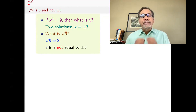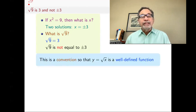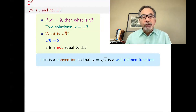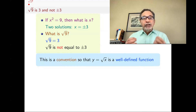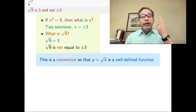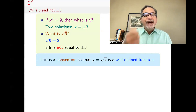Square root of 9 means it's 3, and that's a convention — it's a definition. It's something we have decided as mathematicians, and the reason we have decided that is basically because we want the function y equals square root of x to be a well-defined function. In other words, a function, when you plug in a number, out should come one number.